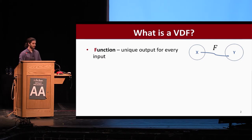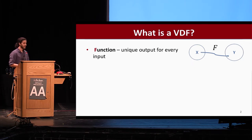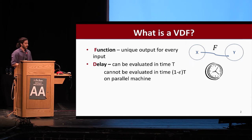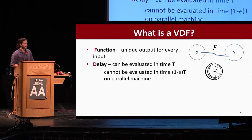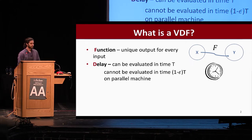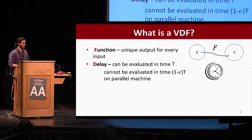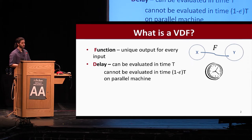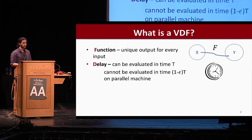A VDF is a function from some domain X to some range Y, meaning that for any input x in X, there's a unique output y in Y. Furthermore, evaluating this function incurs a delay, meaning that it can be evaluated in time t, but cannot be evaluated in time (1 minus epsilon)·t for some small epsilon, even on a parallel machine. In other words, it requires sequential work to evaluate — it takes a long time in terms of wall clock time, not just overall time complexity.